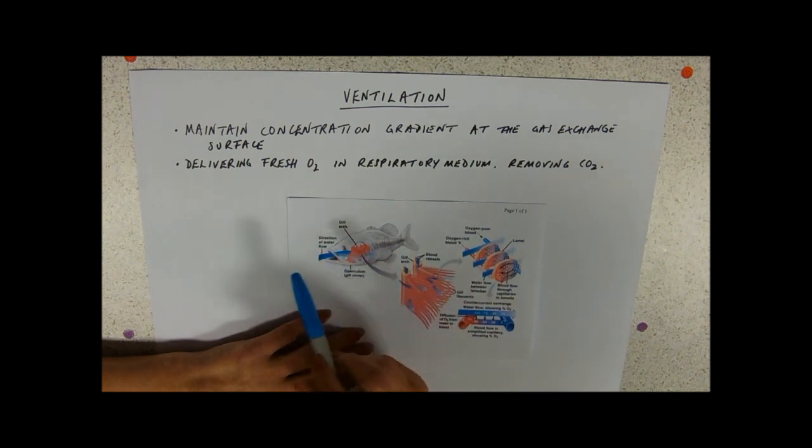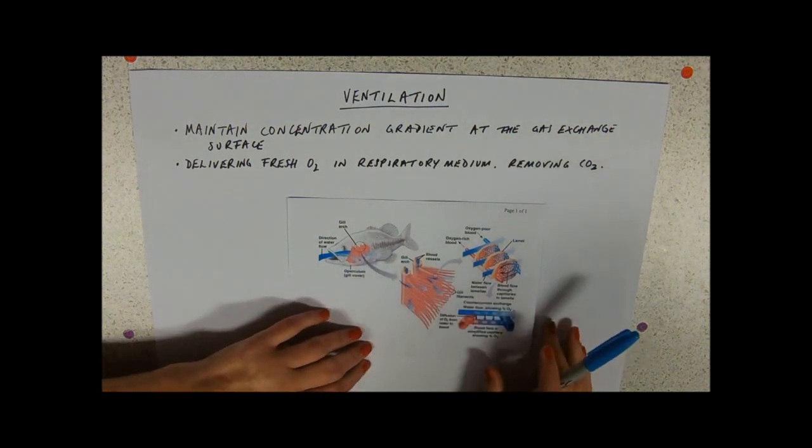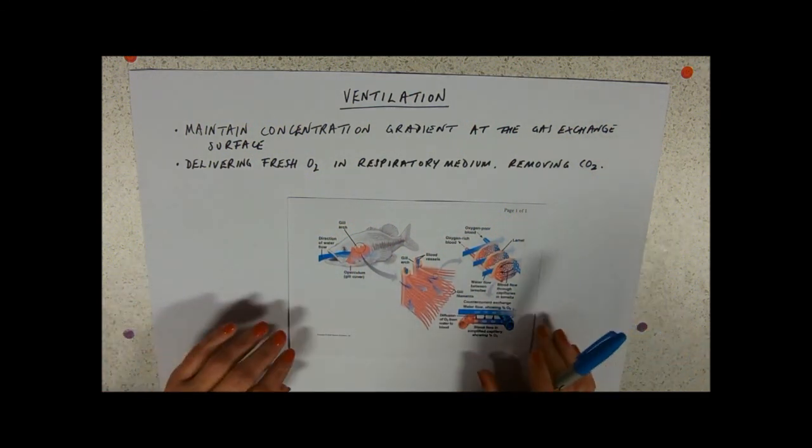Notice again we've got a one-way flow of water going in through the mouth, over the gills, out through the operculum. So it's not just got a hole - the gill slits - to go through. It's going into the mouth, being forced back over the gills, and out through the operculum. So we need to know how that happens.